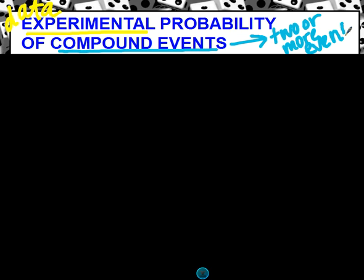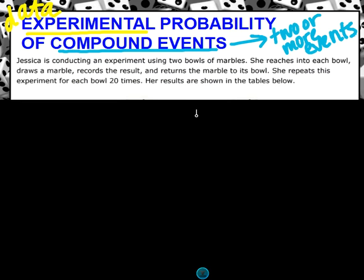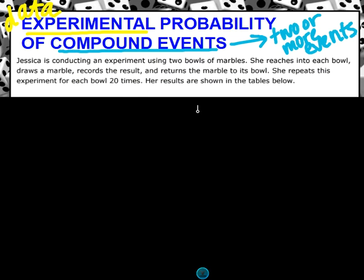This would be like spinning a spinner and rolling a number cube or flipping a coin and spinning a spinner. So more than one thing is happening here. What we usually see when we have experimental probability is some data. So let's go ahead and scroll down here,